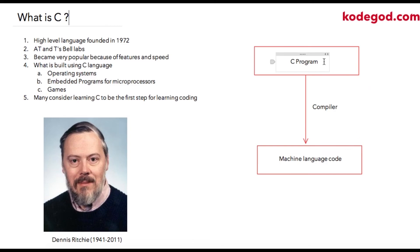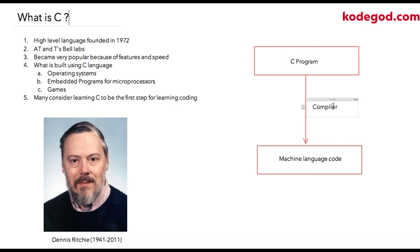So it becomes easier for us to write a C program and then use a compiler, which is a system program that takes this C program and compiles it into machine-level language for us.